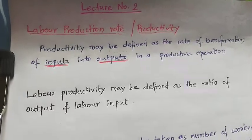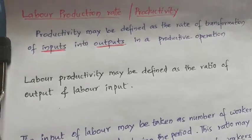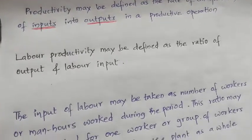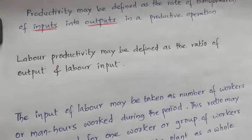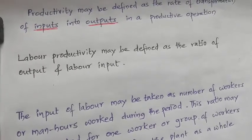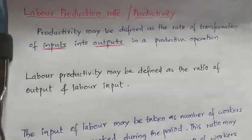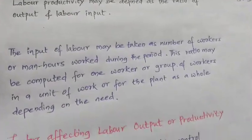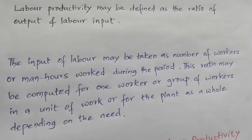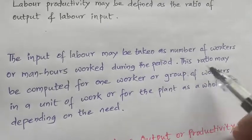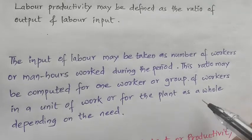Now, how do we measure labor productivity? Labor productivity can be defined as the ratio of output to labor input. In other words, it is the productivity of an industry measured in terms of labor input for the purpose of productivity analysis — the average product rather than the marginal — because the latter fails to reveal the actual and potential level of productivity in its representative character. The input of labor may be taken as the number of workers or man-hours worked during the period. This ratio may be computed for one worker or a group of workers, per unit of work, or for the plant as a whole, depending upon the need.